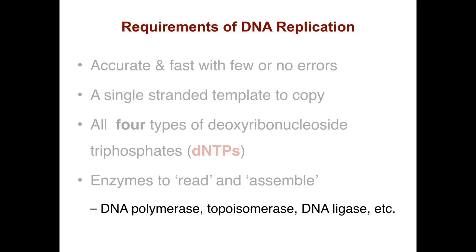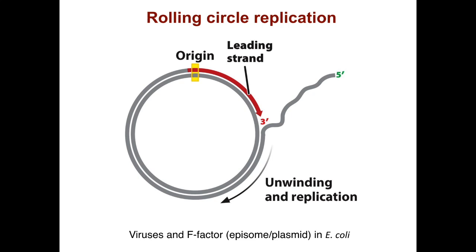Now I'm going to go through the different types of replication that exist. We're going to focus first on what goes on in prokaryotes, and then apply that to what happens in eukaryotes. One form of DNA replication is rolling circle replication, which occurs in viruses and the F-factor in E. coli, including plasmids and epizomes.